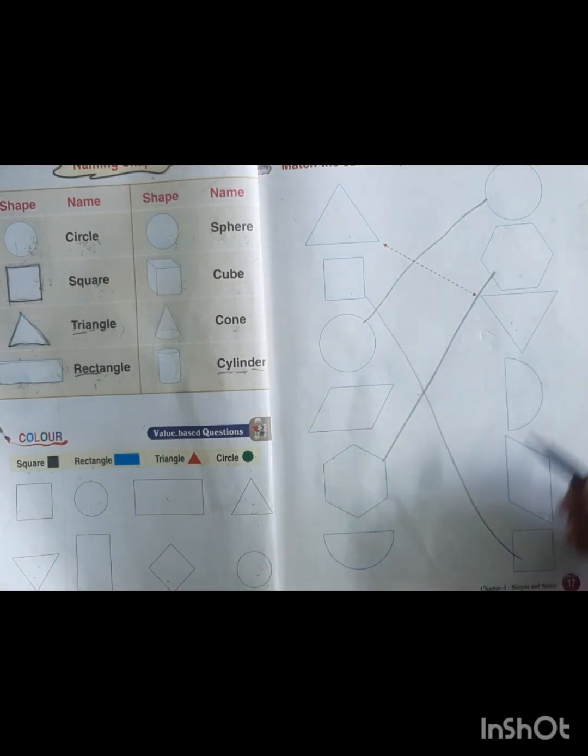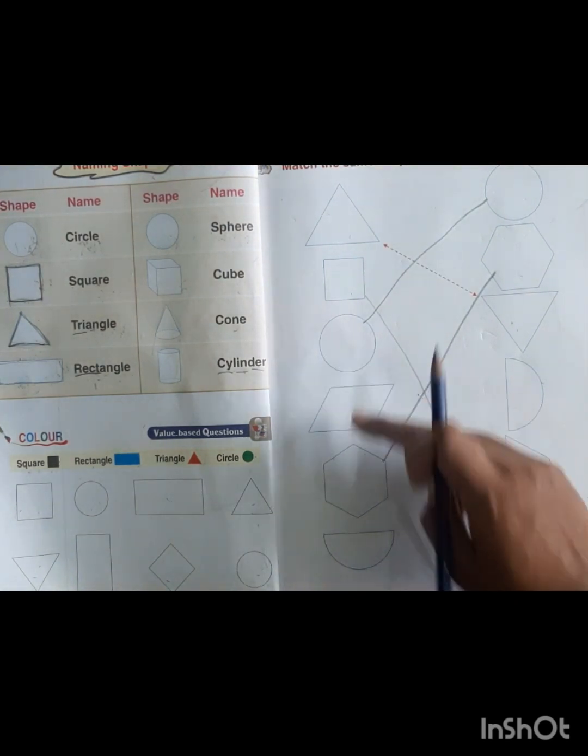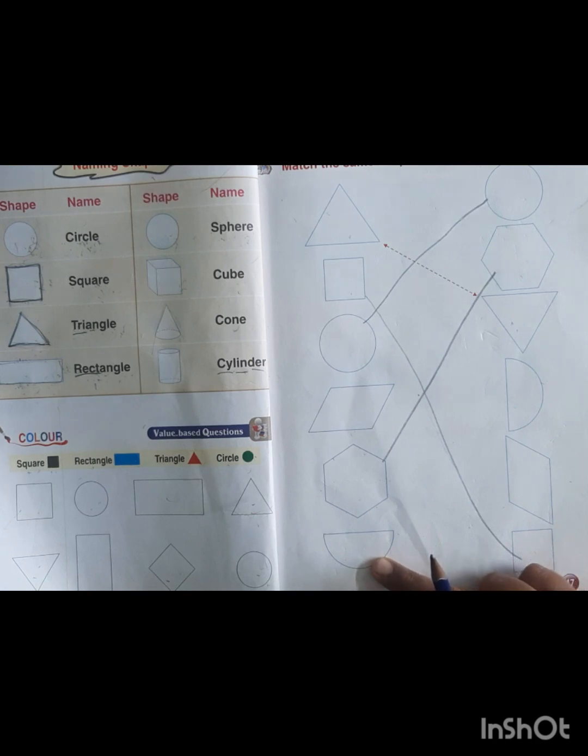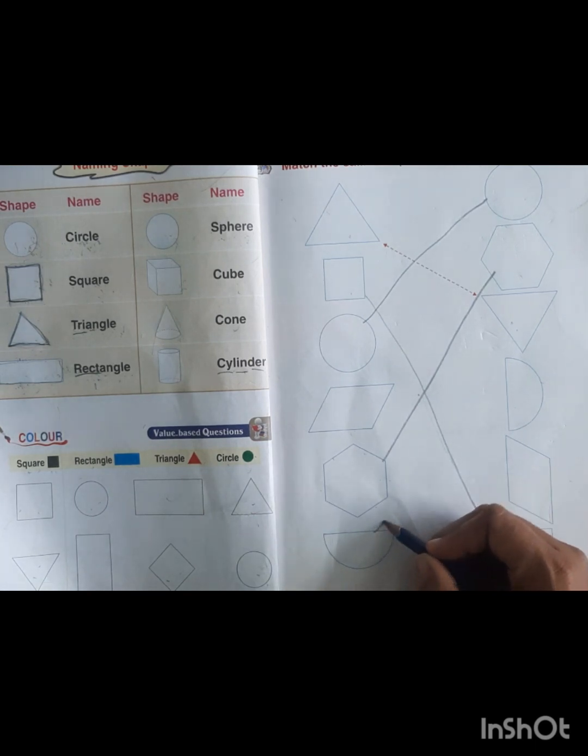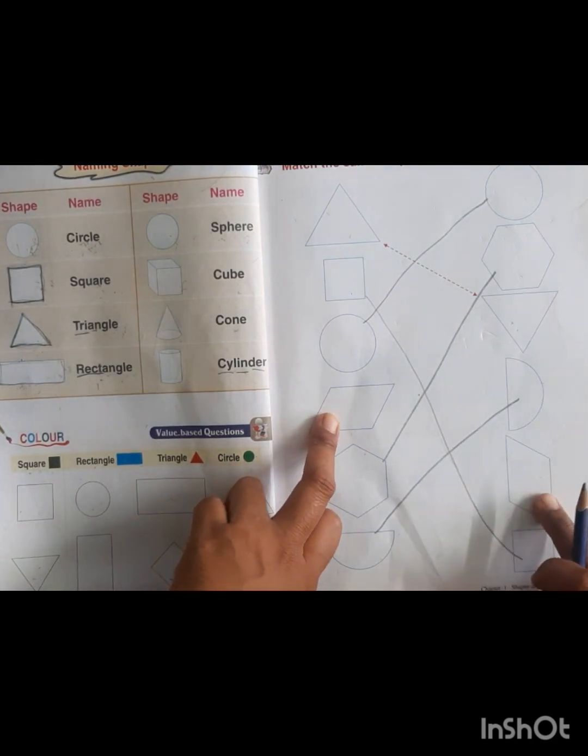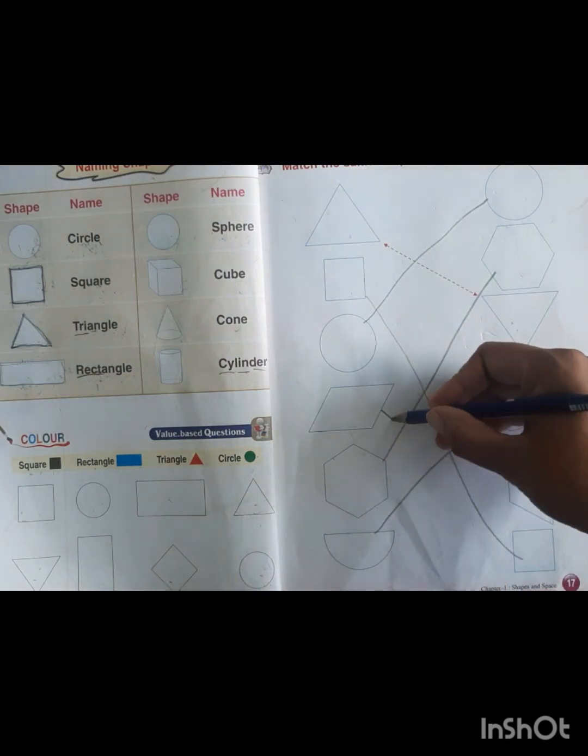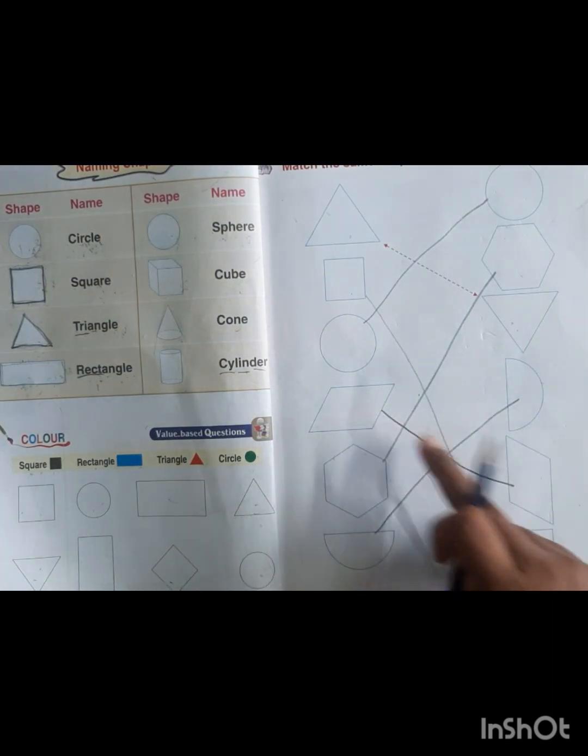This hexagon. There's a circle and these circles. Semicircle, semicircle, which also means semicircles, so we will match these semicircles. This and this is left, so we will match this shape. This is parallelogram, so parallelogram. We have matched it.